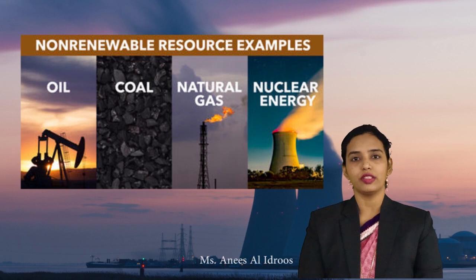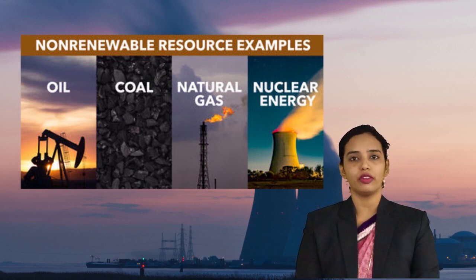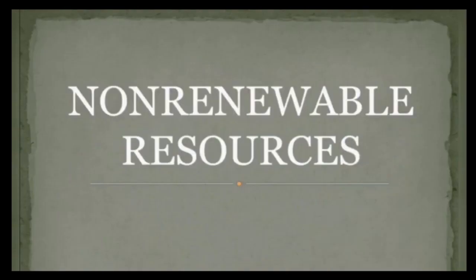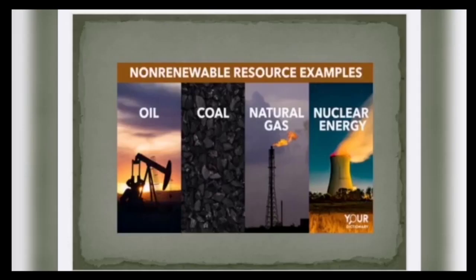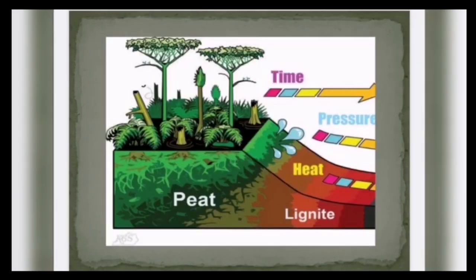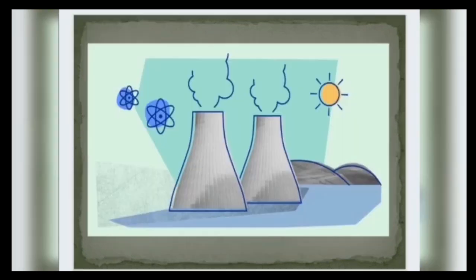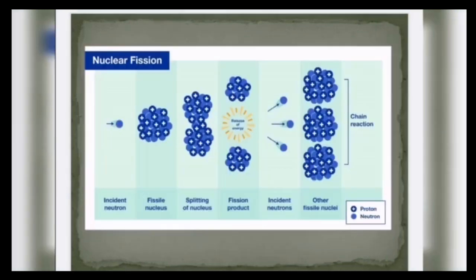Non-renewable resources exist in fixed amounts. There are four major types of non-renewable resources: oil, natural gas, coal and nuclear energy. Oil, natural gas and coal are collectively called fossil fuels. Fossil fuels were formed within the earth from dead plants and animals over millions of years, hence the name fossil fuel. A popular way of generating electricity around the world consists of uranium and similar fuel sources which are finite — these are nuclear energy.